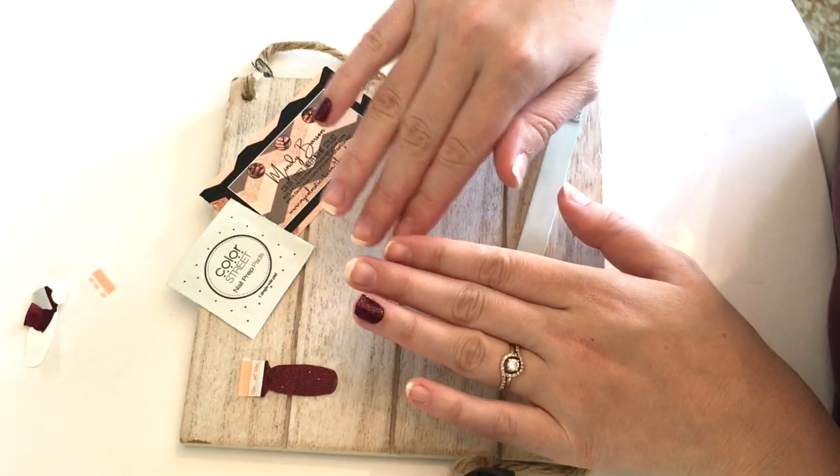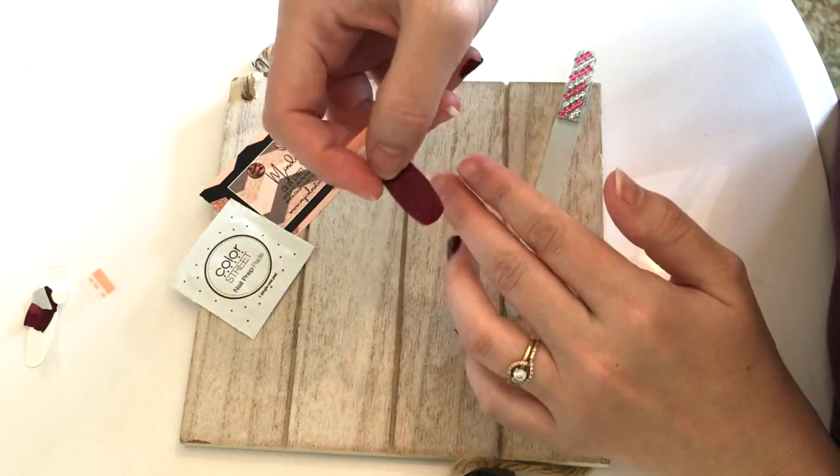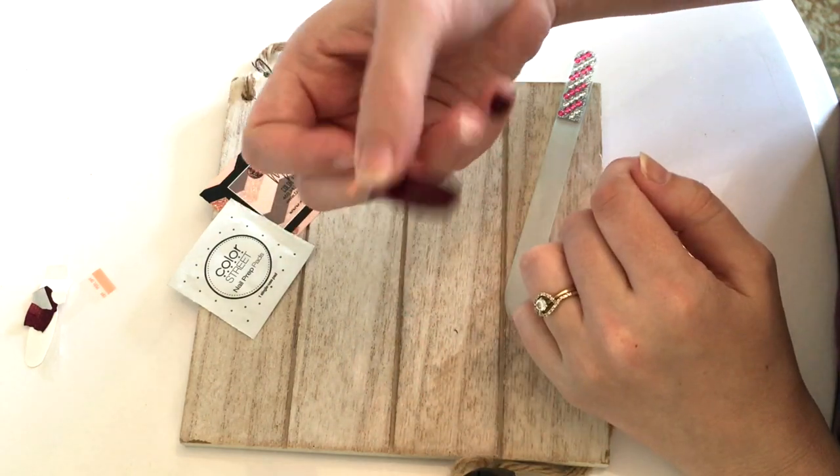So that is how to apply the accent nail. You can use the other strip for any other nail that would fit best or give it to a friend to use.